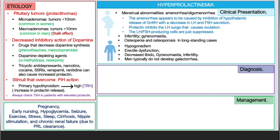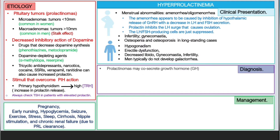For diagnosis, if a patient presents with these symptoms, first rule out physiological causes of elevated prolactin such as pregnancy and drugs. After ruling those out, note that most prolactinomas may also co-secrete growth hormone. A prolactin level greater than 100 nanograms per milliliter suggests a probable pituitary adenoma.